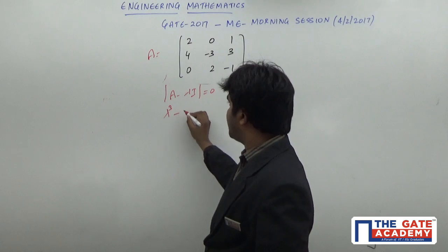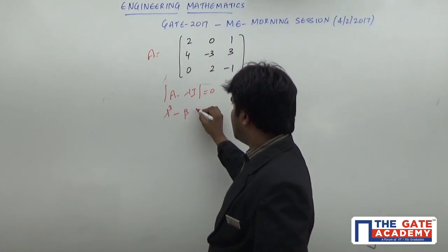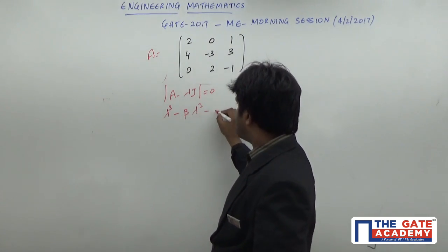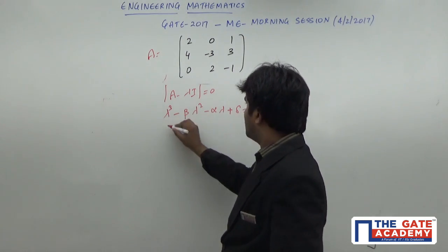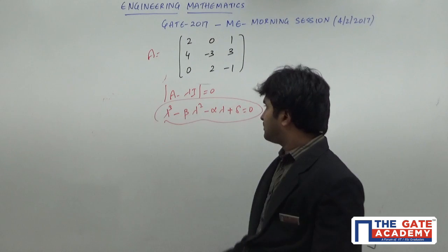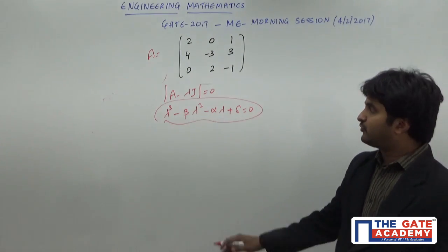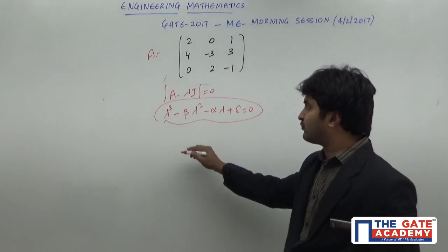You will have something like lambda cubed minus beta lambda squared minus alpha lambda plus delta equals 0. You have to find the solutions of this cubic polynomial.